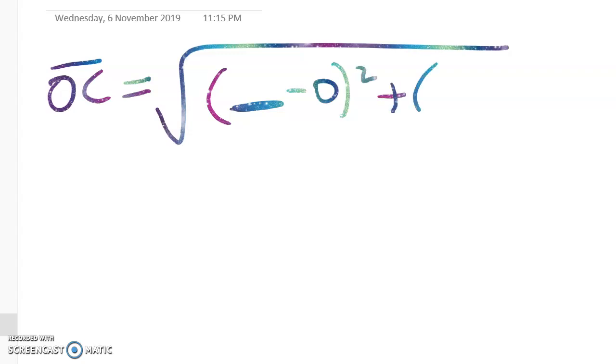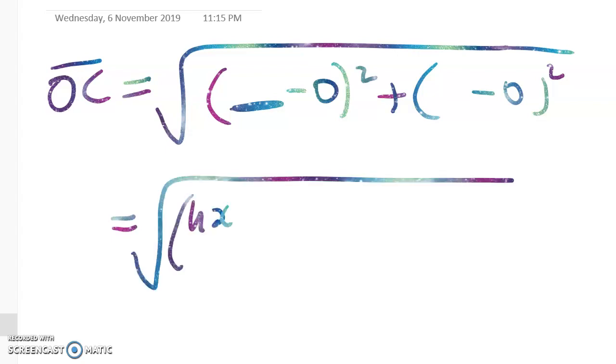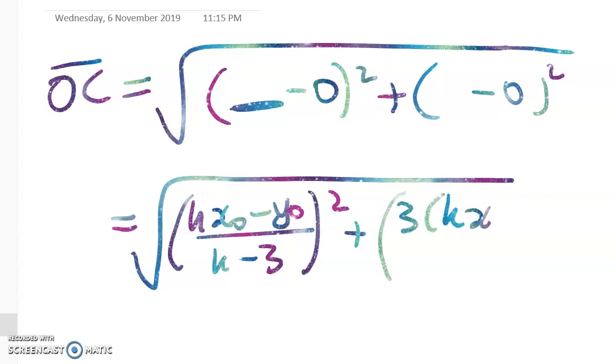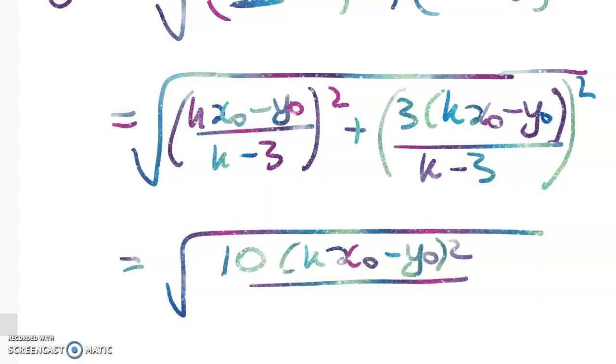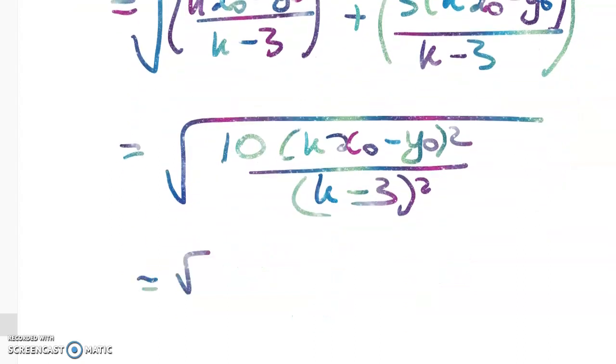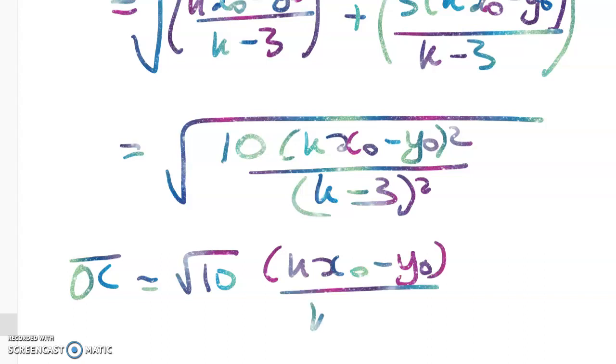So OC, the length OC is going to come from this. It's going to be our x coordinate minus 0 squared plus our y coordinate minus 0 squared. Substituting those values in gives me this: (kx₀ - y₀)/(k - 3) squared. You can see that this is going to start to simplify down. That gives me 10 times this. So we've got a perfect square in there, so that's good.